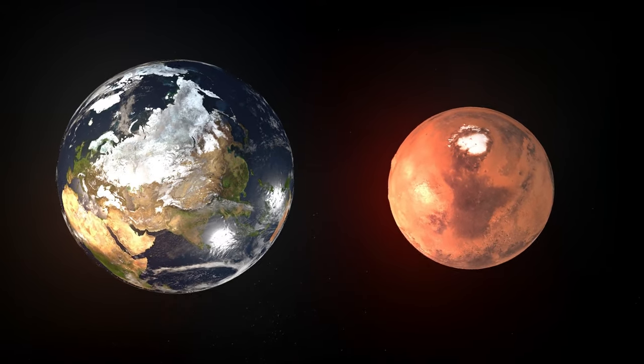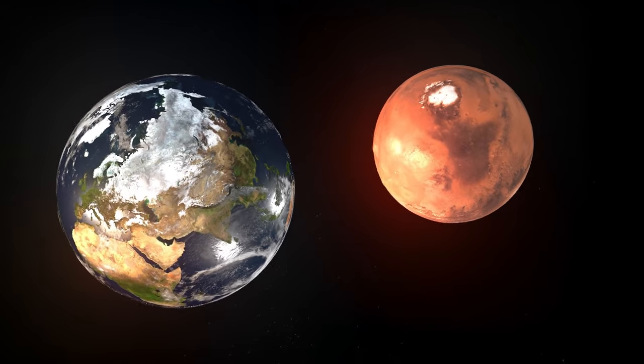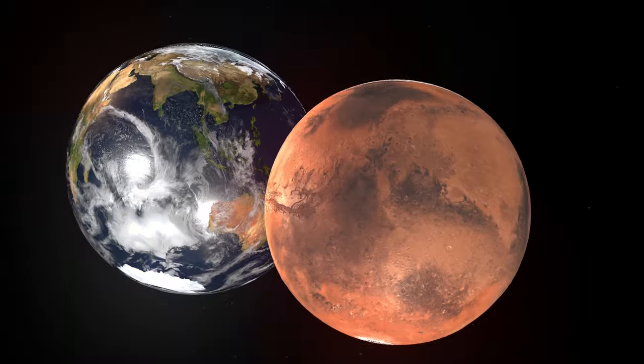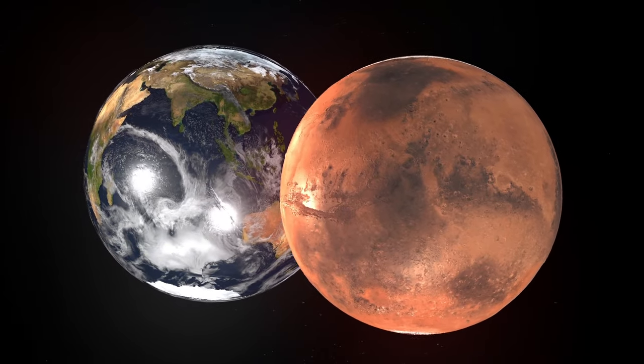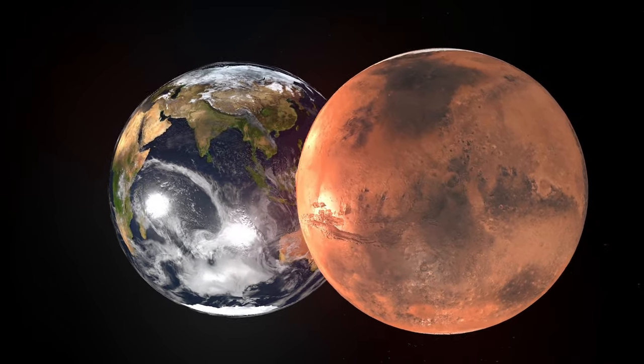Mars isn't large enough to change the Earth's orbit dramatically. But with time, the two planets would probably begin to orbit each other, creating a binary planet system.